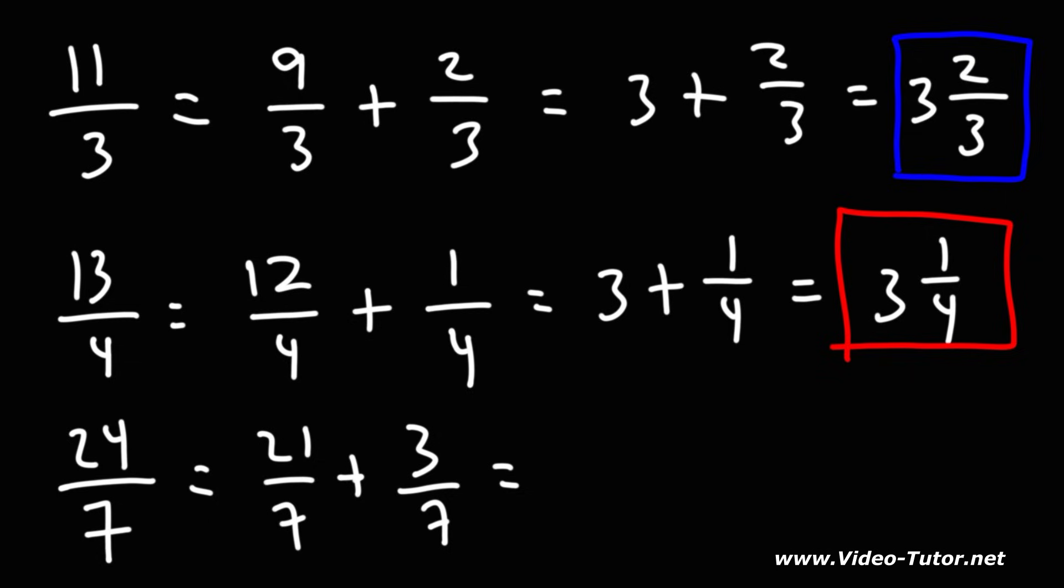So we can write 24 over 7 as 21 over 7 plus 3 over 7. 21 divided by 7 is 3. So we have 3 plus 3 over 7. So we can write that as a mixed number, 3 and 3 sevenths. So that's a quick and simple way of how you can convert an improper fraction to a mixed number without using long division.